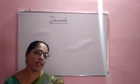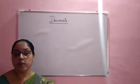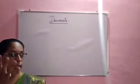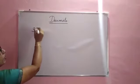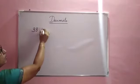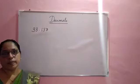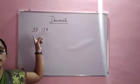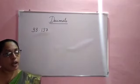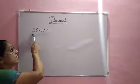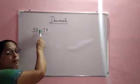What is a decimal number? I know you all know this. Let's take an example: 33.137. Here I took a decimal number. How will you read it? 33 point — this dot is called the decimal point.